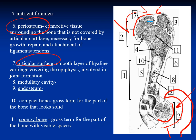We have the articular surface — this is the area where bones articulate with each other; for example, the humerus articulates with the scapula at one end and with the ulna at the other. The articular surface usually consists of hyaline cartilage, and at this area there is no periosteum. Inside the bone we have a cavity called the medullary cavity, which contains bone marrow responsible for the formation of red blood cells and white blood cells.